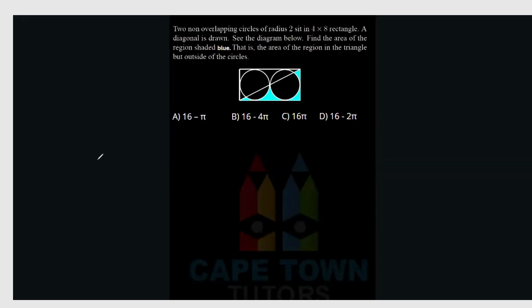Next question says: two non-overlapping circles of radius 2 sit in a 4 by 8 rectangle. So then this would be 8, I believe, and this would be 4. A diagonal is drawn. See the diagram below. Find the area of the region shaded blue, that is the area of the region in the triangle but outside of the circle.